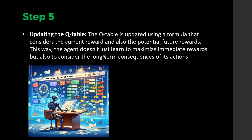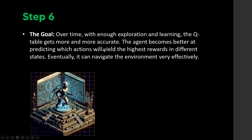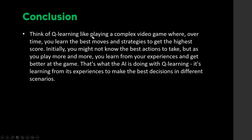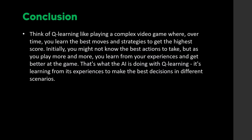That's why this algorithm is really cool — it has long-term consequences built in. Step six: over time, with enough exploration and learning, the Q-table becomes more and more accurate. The agent gets better at predicting which actions yield the highest rewards in different states and can eventually navigate the environment very effectively. Think of it like playing a complex video game: over time you learn the best moves and strategies, and that's exactly what this AI does with Q-Learning.